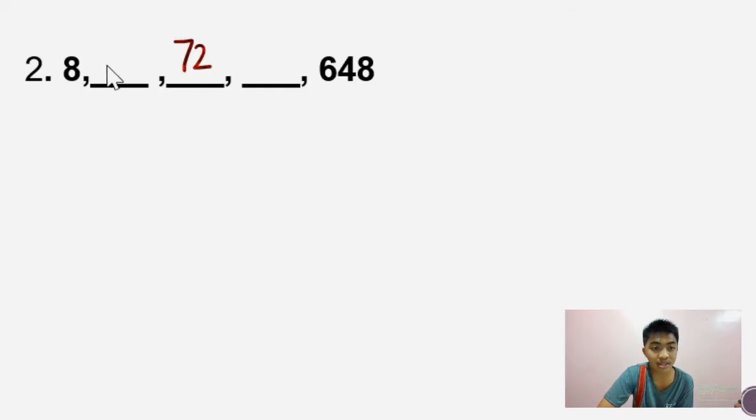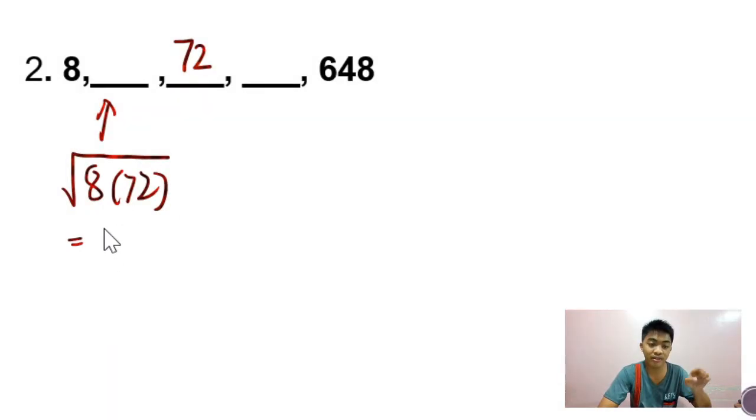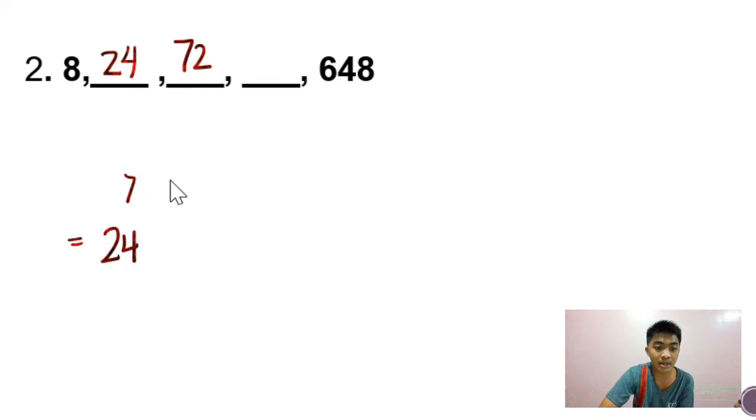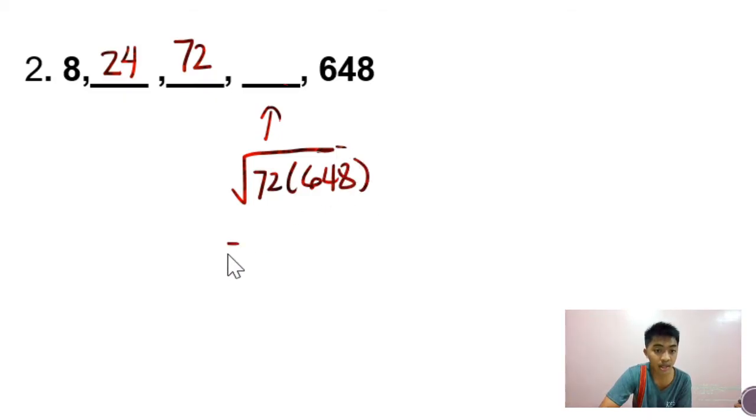Now, for us naman to get the middle of 8 and 72, we get their product and we're going to take the square root of their product. And if we're going to evaluate that, the answer will be 24. So we're going to put 24 here. And para naman makuha yung term in between 72 and 648, we're going to take the square root of the product of 72 and 648. And the answer there is 216.